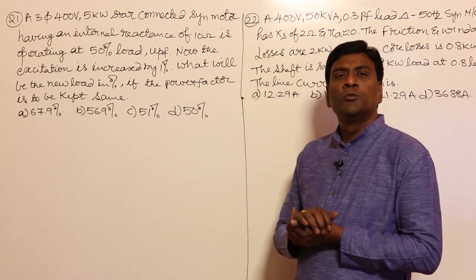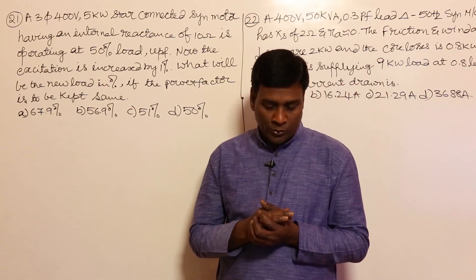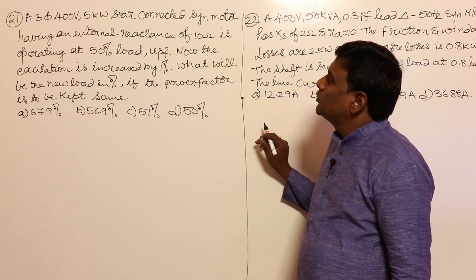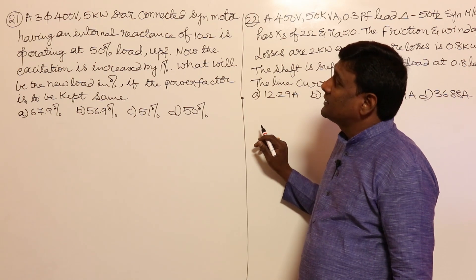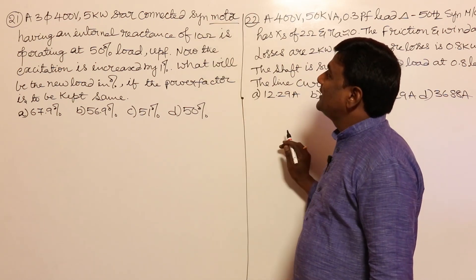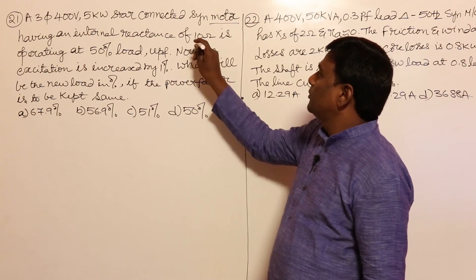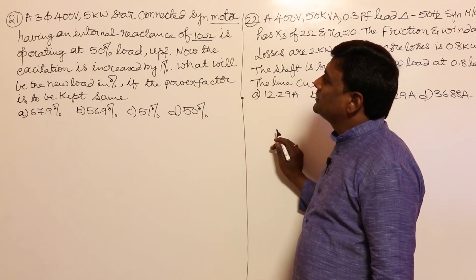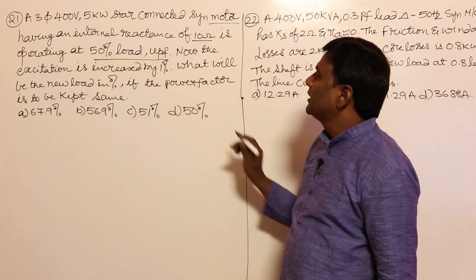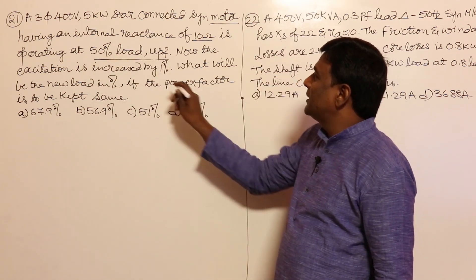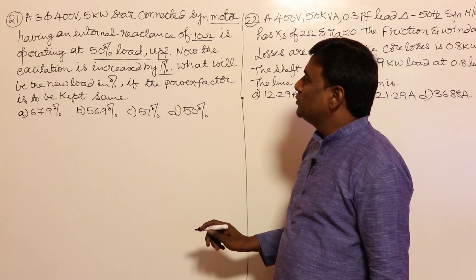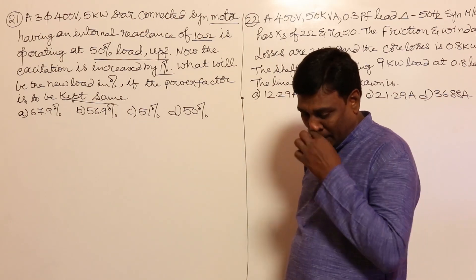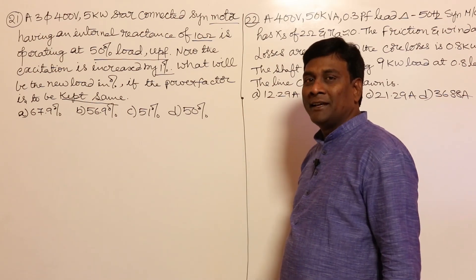In this session, let us solve a few more problems on synchronous machines at loaded conditions. The first question involves a three-phase 400 volts, 5 kilowatt, star-connected synchronous motor having an internal reactance of 10 ohms — resistance is neglected — operating at 50 percent of load at unity power factor. The excitation is increased by one percent; what will be the new load in percent if the power factor is to be kept the same? Let us draw a diagram first.